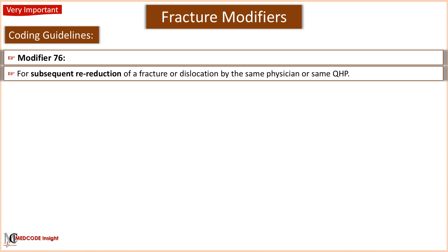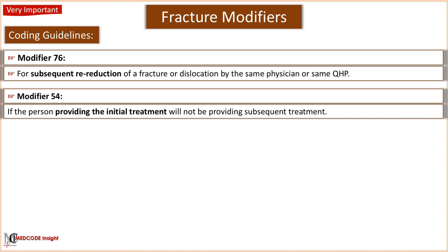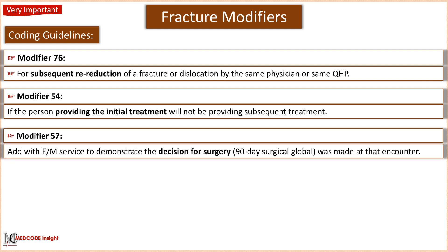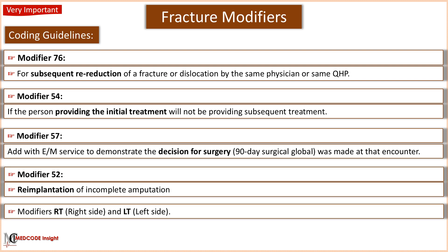Let's discuss the most common modifiers used with fracture care codes. For subsequent reduction of a fracture or dislocation by the same physician, append modifier 76 to the fracture or dislocation treatment code. If the person providing the initial treatment will not be providing subsequent treatment, modifier 54 should be appended. Add modifier 57 to the evaluation and management service to demonstrate that the decision for surgery was made at that encounter. Use modifier 52 for re-implantation of incomplete amputation. Modifier RT is used for the right side and LT for the left side.